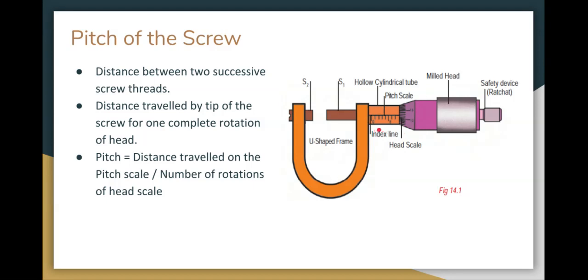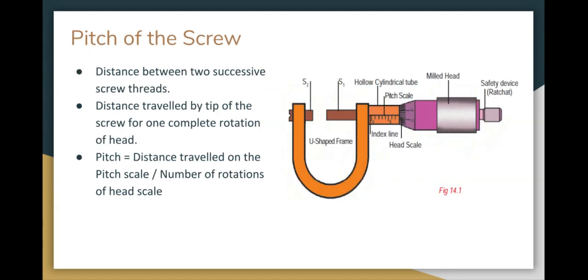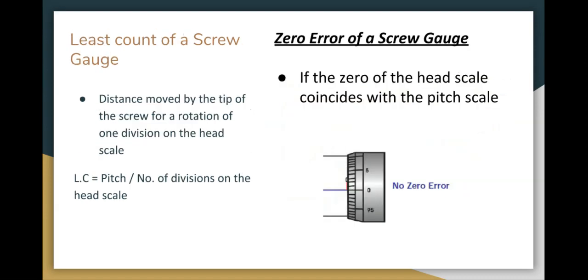So the formula for pitch: pitch is equal to distance traveled divided by number of rotations on the head scale. The least count, to calculate the least count, the pitch divided by the number of divisions in the head scale. In the head scale there are divisions. In the head scale, one division, one rotation, one screw will travel.